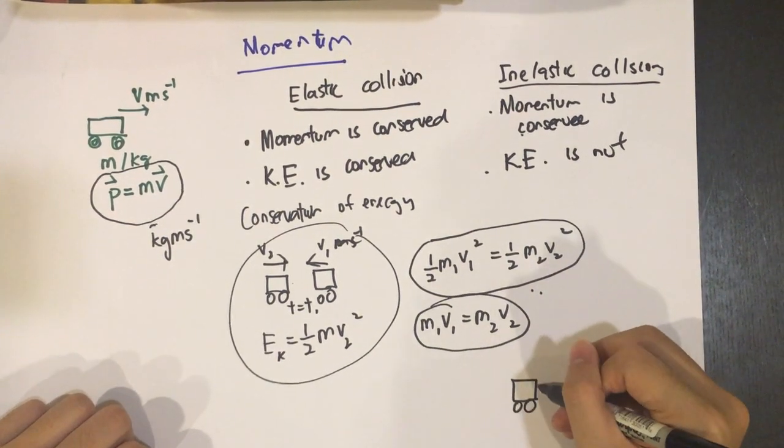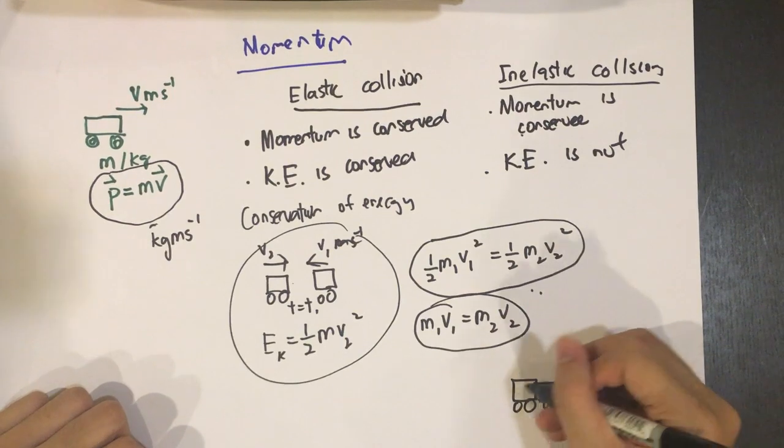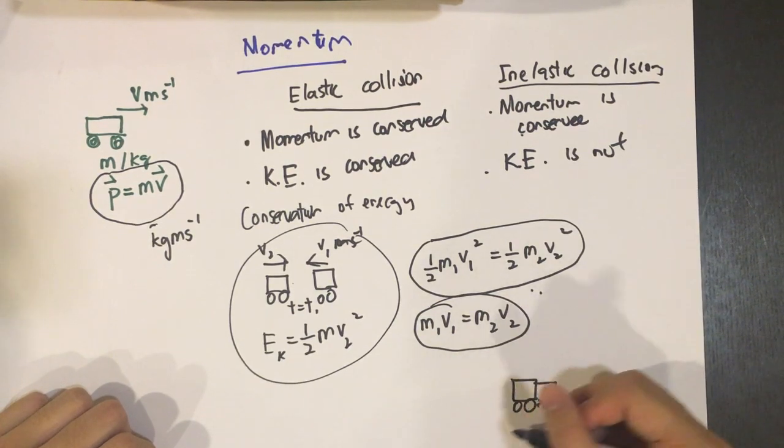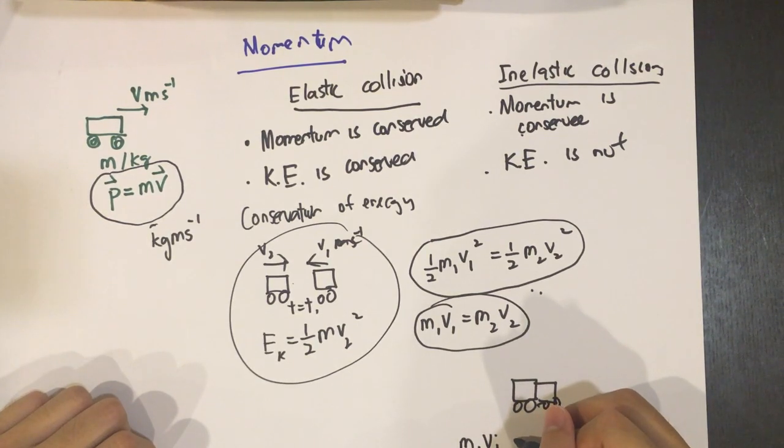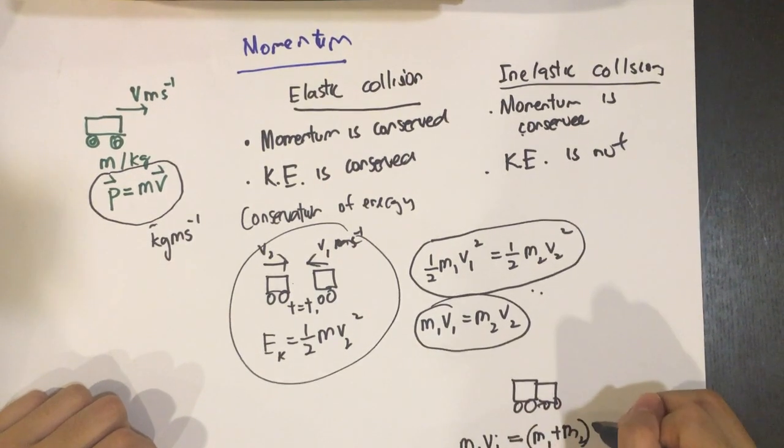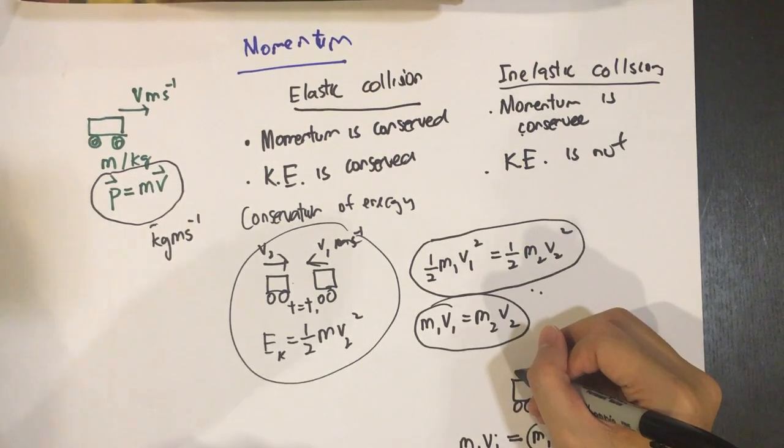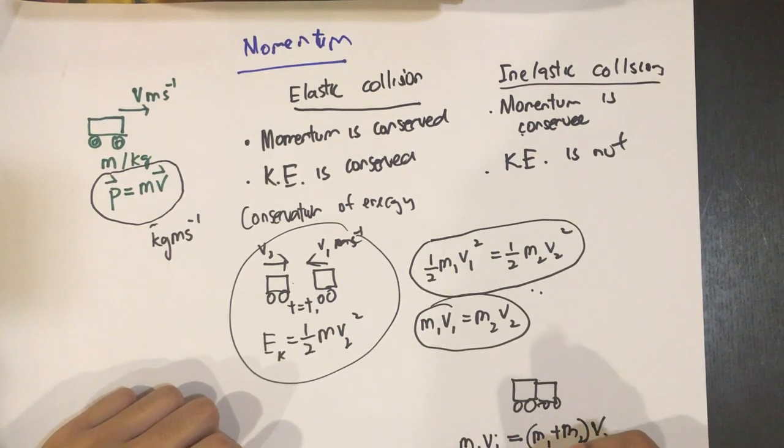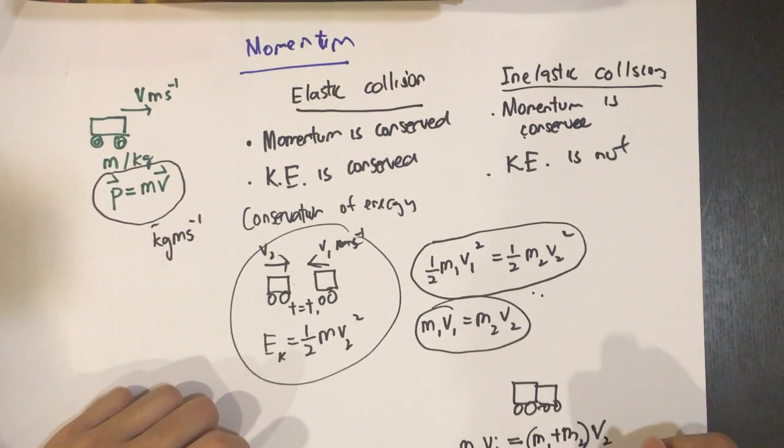When these two, say, cars collide, this is especially a prominent example because it's easier to know. They get stuck together and they don't rebound off, etc. So what happens when we say that is that the momentum, the initial momentum M1V1 will equal to M1 plus M2 all times by V2. Because now they are stuck together. Suppose we have this mass and this mass, and then they end up become this. So we can rearrange that to be V2 equals M1 over M1 plus M2 times by V1.